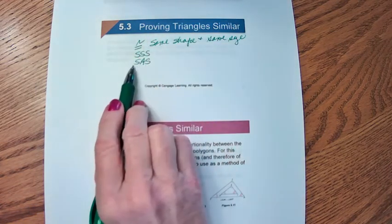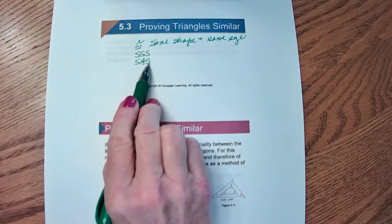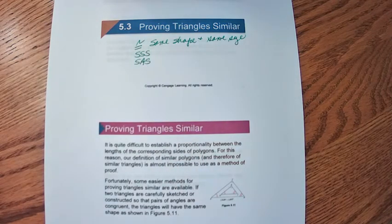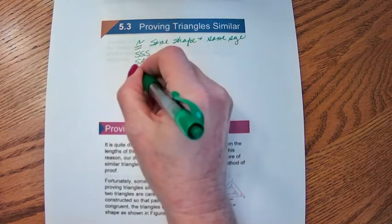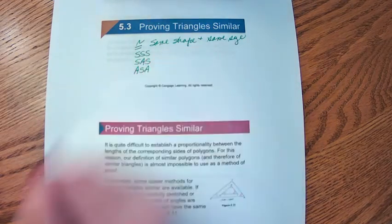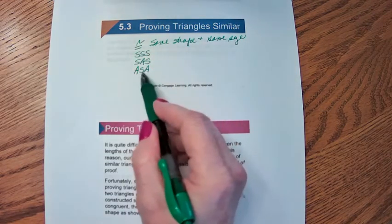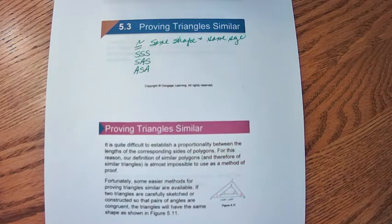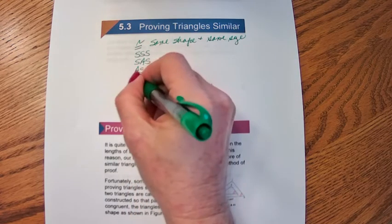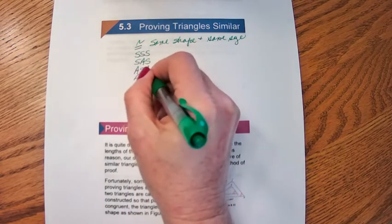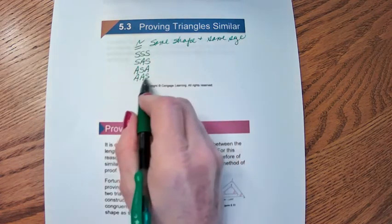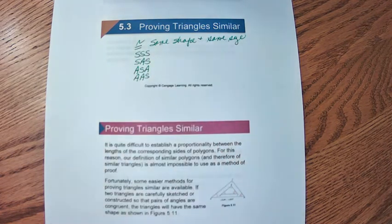Side-angle-side: a side, the included angle, and a second side are congruent across two triangles. Angle-side-angle: two angles with the included side are congruent. Angle-angle-side: two angles and then the non-included side.